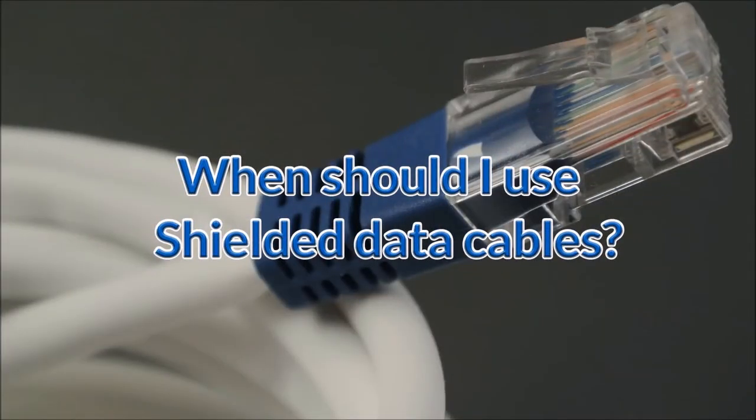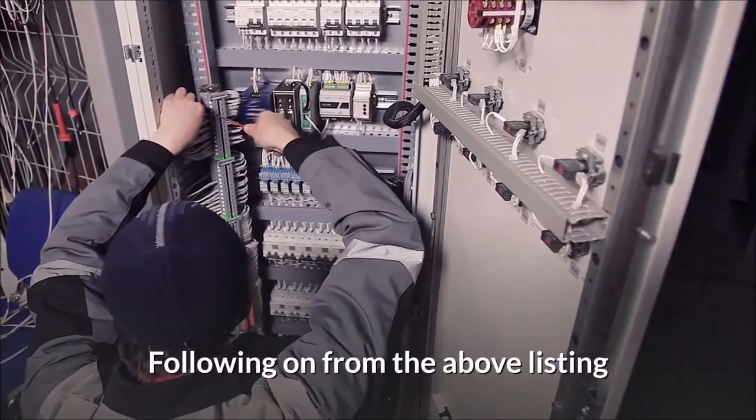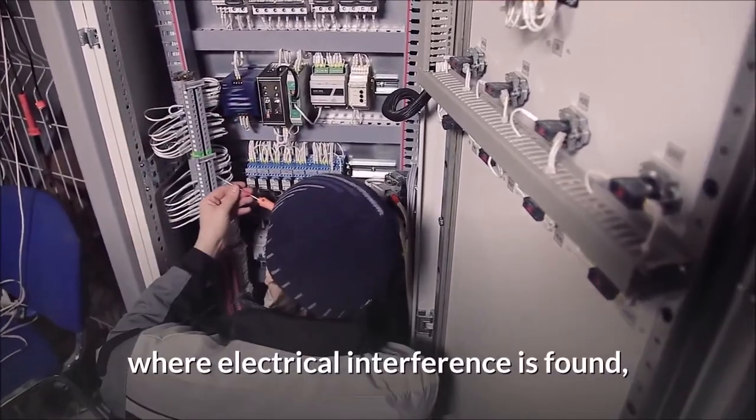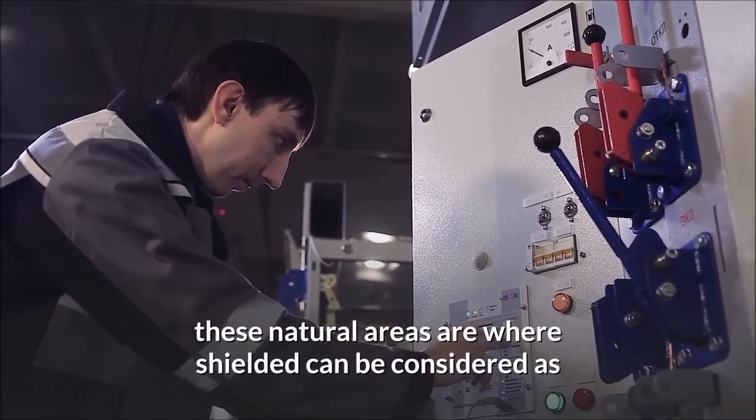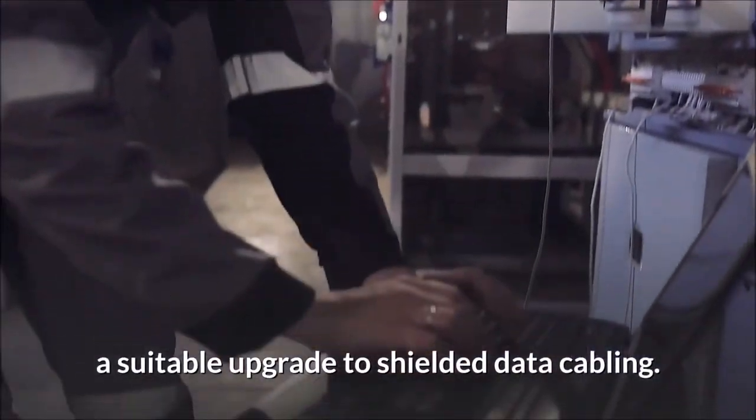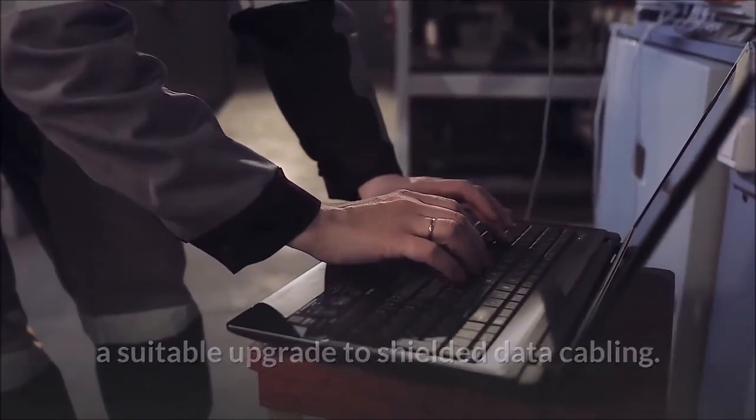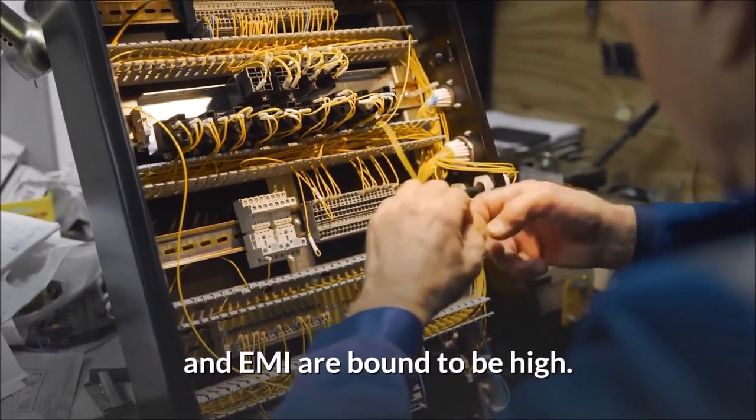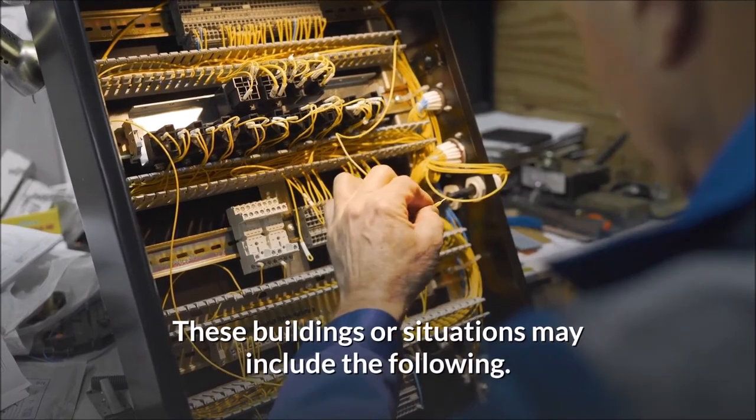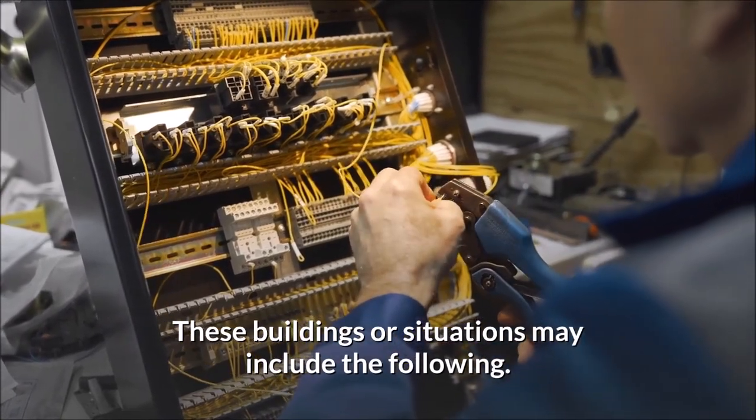When should I use shielded data cables? Following on from the above listing, where electrical interference is found, these natural areas are where shielded can be considered as a suitable upgrade to shielded data cabling. These are areas where electrical interference and EMI are bound to be high. These buildings or situations may include the following.